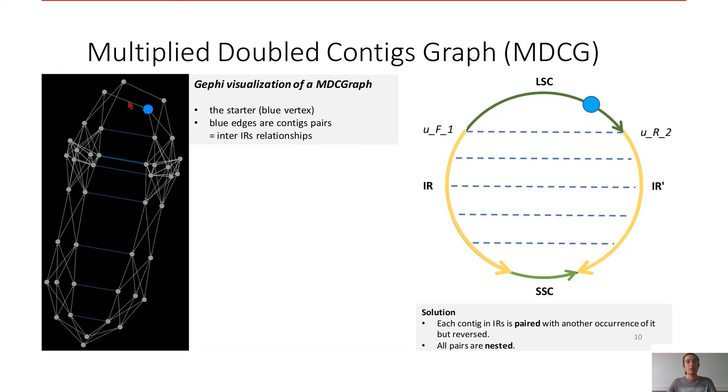That's why we obtain what we call a multiply by multiplicity, double because of the two strands, contig graph, MDCG. All the links are multiplied 2 and doubled 2, and they are represented by gray edges here. What about the blue ones?